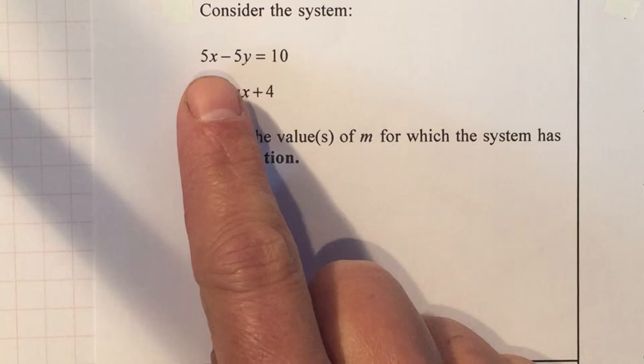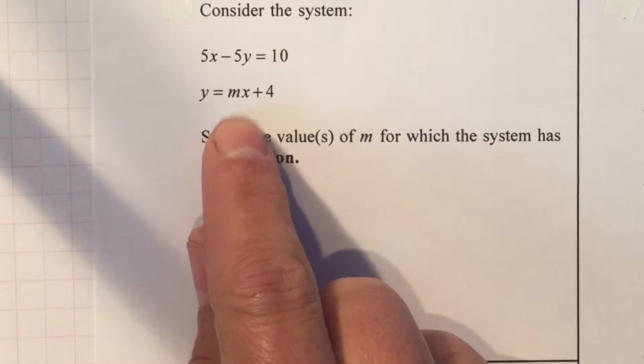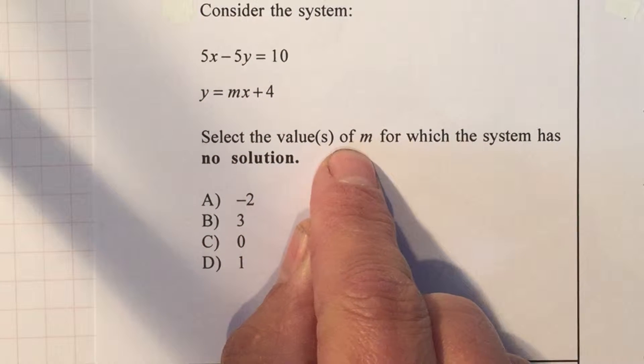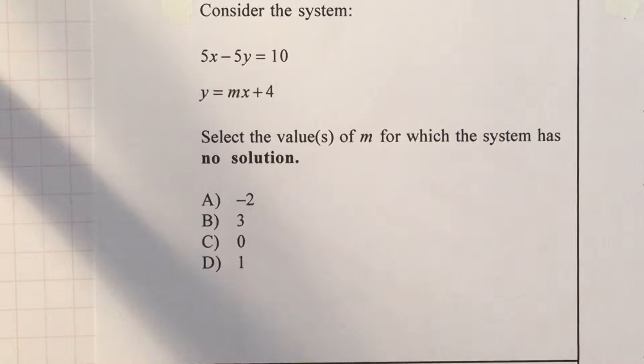Consider the system. They give you a system of equations, two equations, and they want you to select the value of m, or values of m—and here's the variable m—for which the system has no solution.